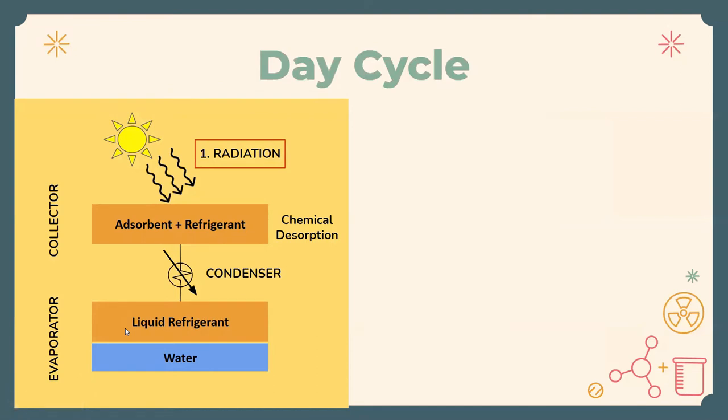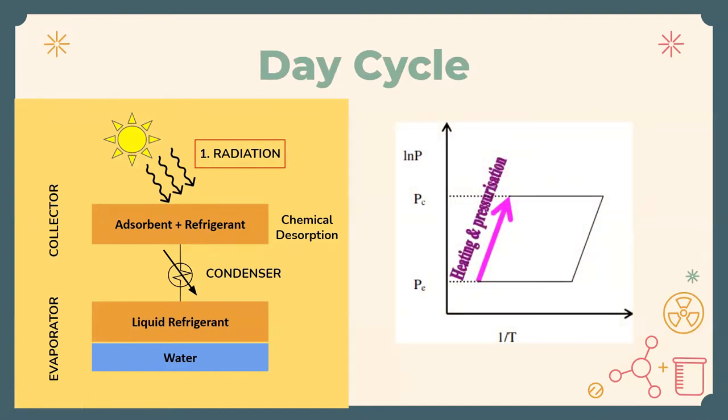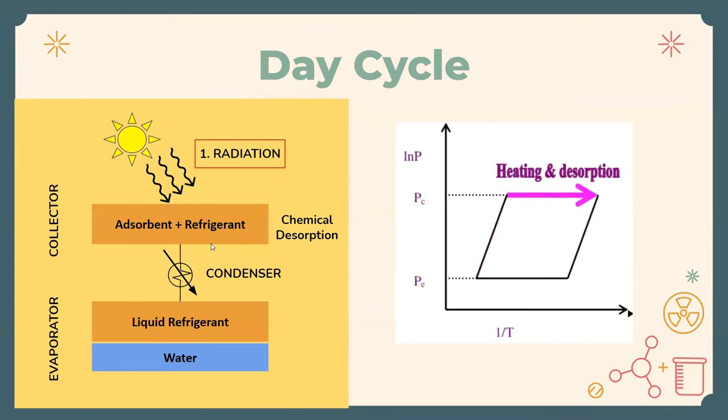A common way to analyze these phase transitions is through the well-known Clapeyron diagram, which is a graph of log P versus one by T. Initially, the collector heats up and its pressure rises from the evaporator pressure to the condenser pressure, and then at constant temperature desorption occurs and it vaporizes and goes into the condenser.